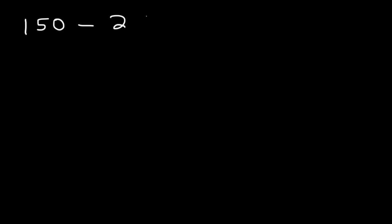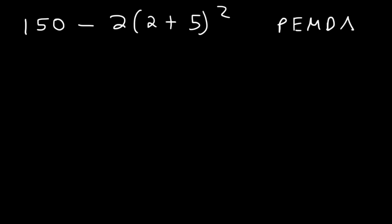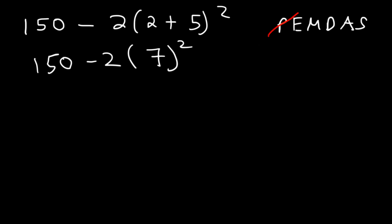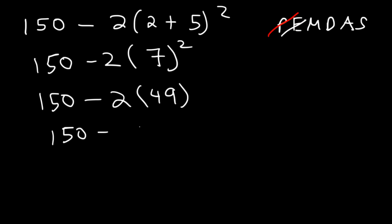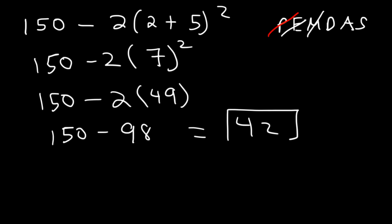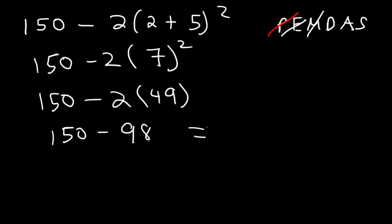Try this: 150 minus 2 times the quantity 2 plus 5, squared. Work inside the parentheses first, then exponents, then multiply, then subtract. 2 plus 5 is 7. 7 squared is 7 times 7, which is 49. 2 times 49 is 98. 150 minus 98 is 52. So 52 is the final answer — you can confirm that with a calculator.